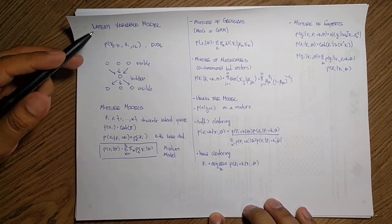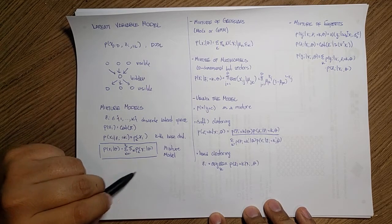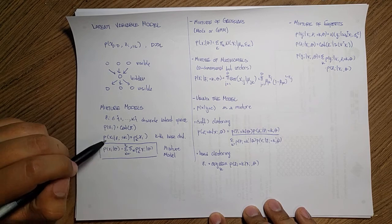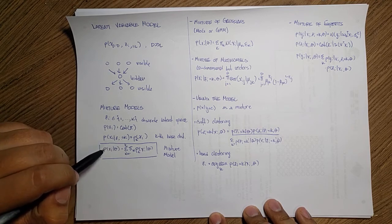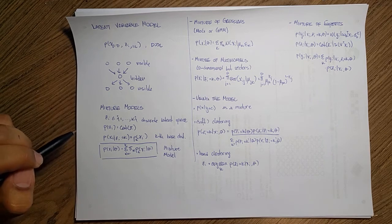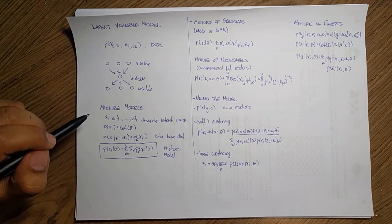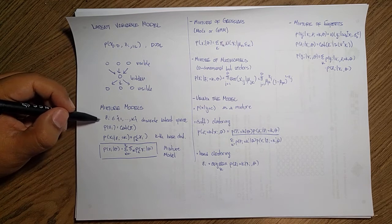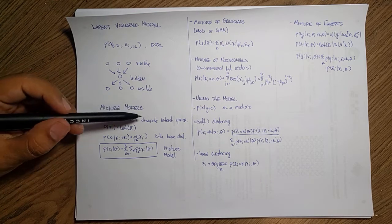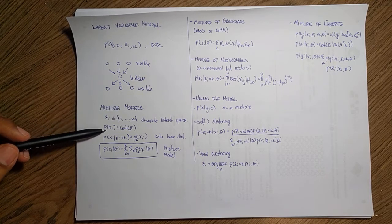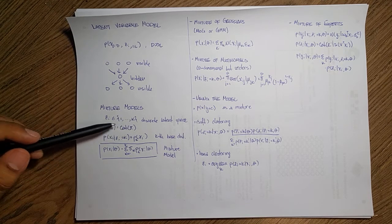So we define a mixture model as a sum of different models that are weighted by some particular probability. So in this case, for instance, what we have over here is a discrete latent mixture model, which are like these latent variables CIs. They live in this discrete space. And since they are discrete, the probability over them is categorical. So we have, what is the probability of being in a particular category?